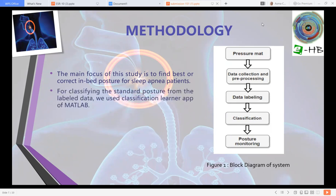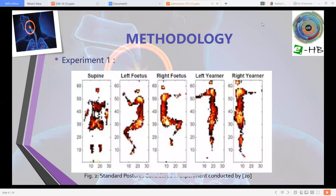For classifying the standard posture from labeled data, we use classification learner app of MATLAB software. The basic standard postures considered in the experiment are: supine, left-right fetus, and left-right urinary. In experiment number one, we consider these five standard postures for finding out the postures of a patient.